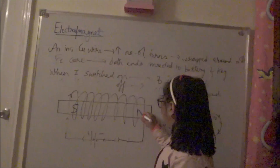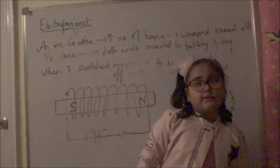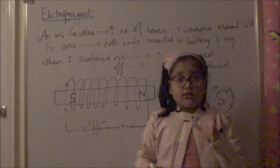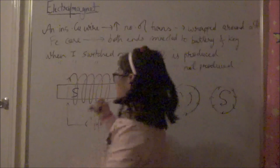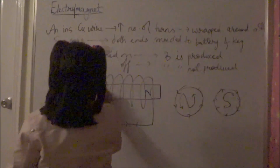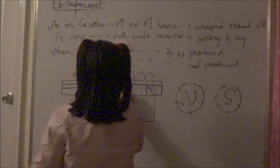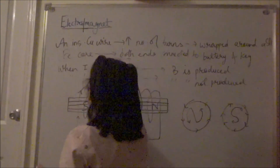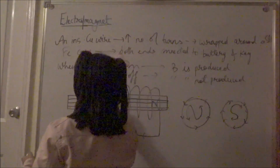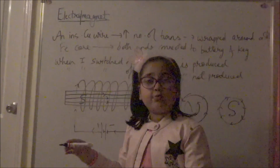Now let's look at the magnetic field. The field lines inside a solenoid are straight, parallel, and equidistant. Inside the solenoid, the field travels from south to north. Outside the solenoid, the field travels from north to south as closed continuous curves.